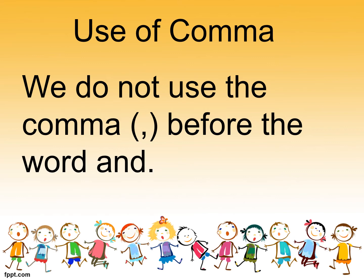We do not use the comma before the word 'and'. So if you are writing a sentence or a list of items, you would not put the comma before you write the word 'and'. So if it is tomatoes, comma, lettuce, comma, cucumbers and onion — you would not put a comma before 'and onion'.